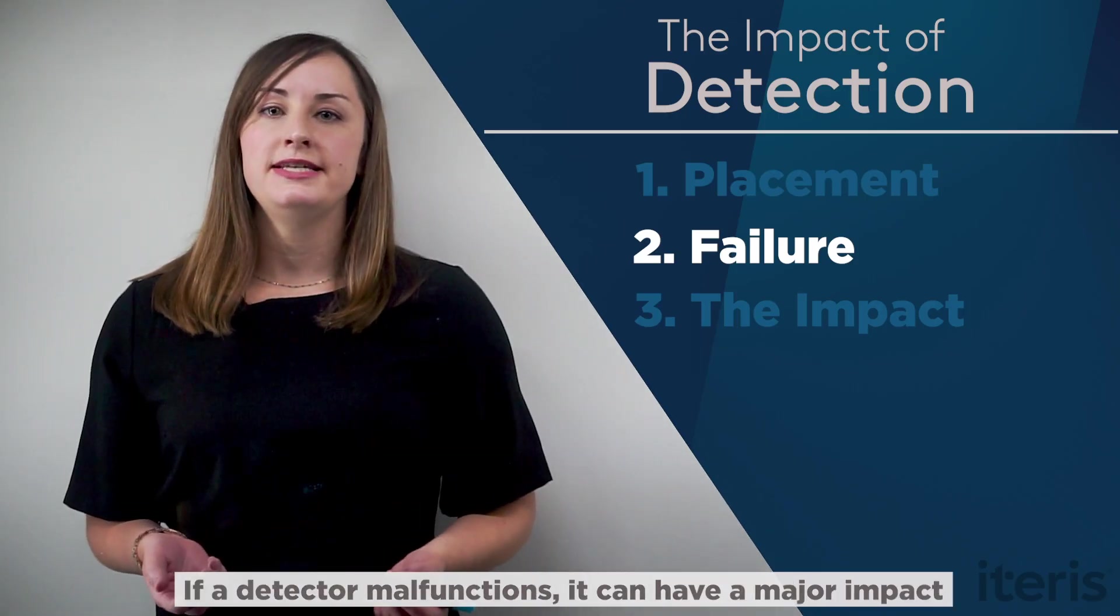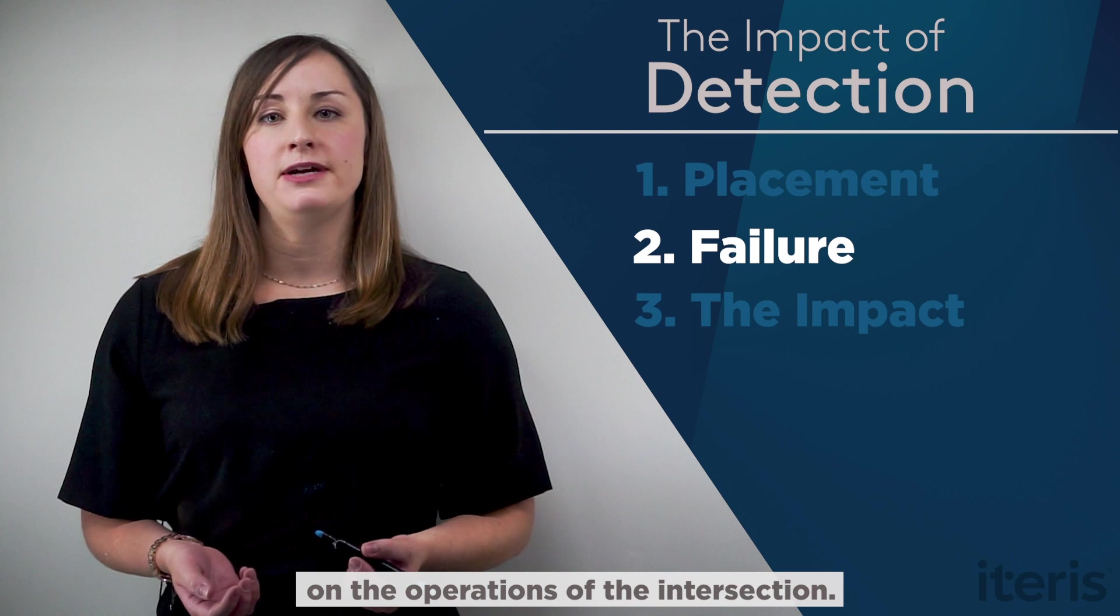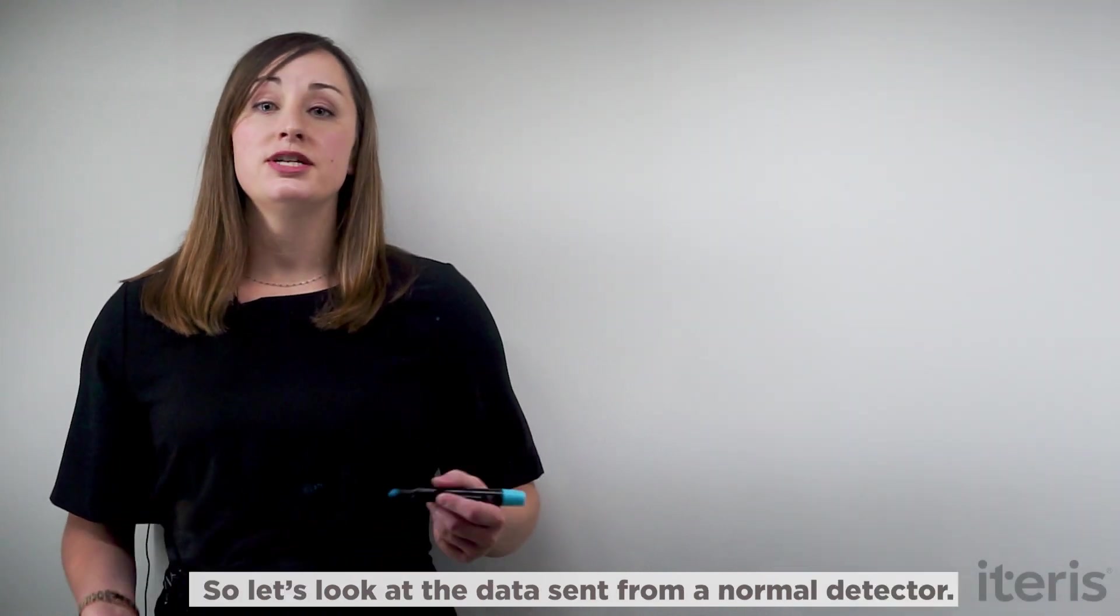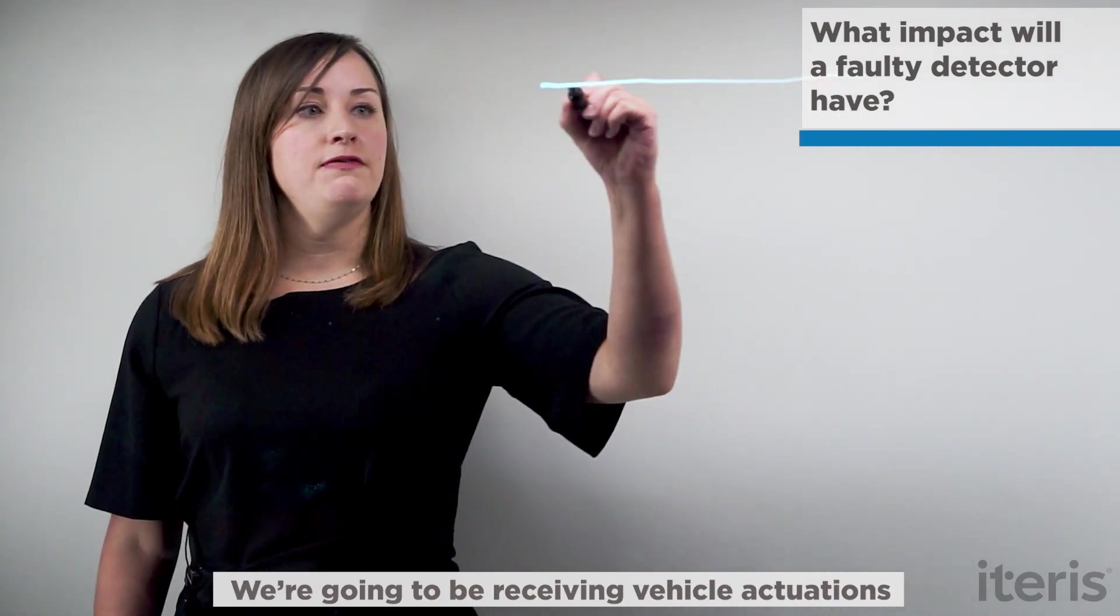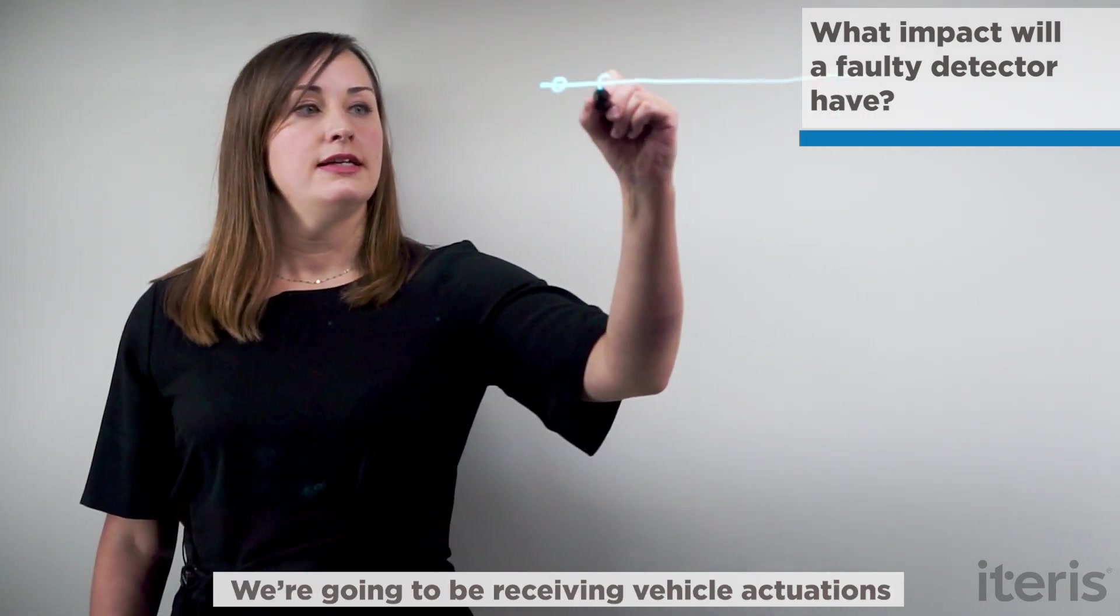If a detector malfunctions, it can have a major impact on the operations of the intersection. So let's look at the data sent from a normal detector. We're going to be receiving vehicle actuations as they happen.